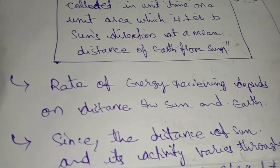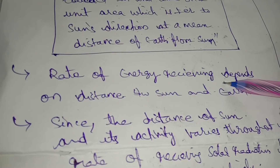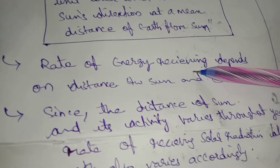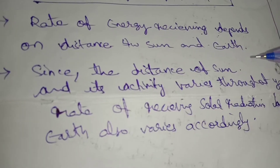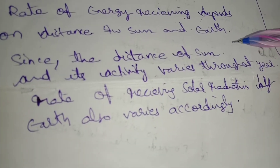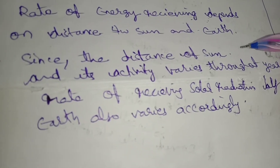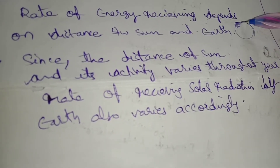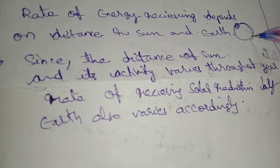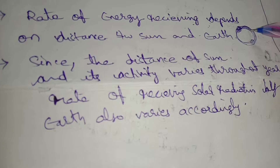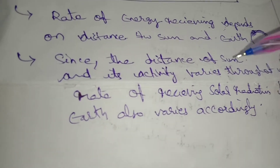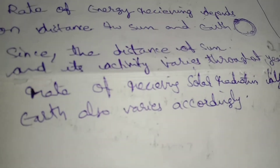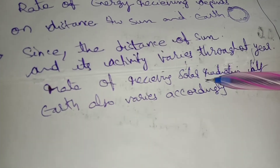The rate of energy receiving depends on the distance between the sun and Earth. The distance of the sun and its activity varies throughout the year, so the rate of receiving solar radiation on Earth also varies accordingly.